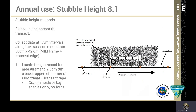The first method is called stubble height, Section 8.1. If you have not established and anchored transects earlier in the sampling effort, you will need to do so. Data are collected at 1.5-meter intervals along the transects in quadrats which are 50 centimeters by 42 centimeters, indicated using the MIM frame and the edge of the transect. To collect stubble height, you lay the MIM frame along the transect with the points of the MIM frame lining up with 0 and 50 centimeters on the transect.